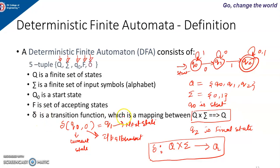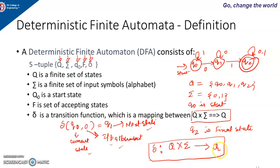Delta is a transition function which is a mapping from Q cross sigma to Q. The transition function takes two parameters — the current state from set Q and the input alphabet from sigma — and the output is the next state, which also comes from Q. That is why we write delta as a mapping from Q × sigma to Q. Hope you have understood the concept. Thanks for watching.